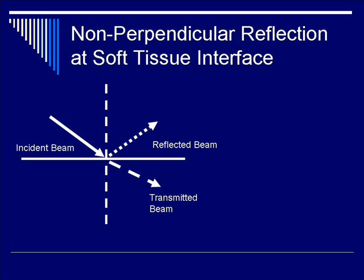The reflected beam and the transmitted beam's amplitude add up to 1, equivalent to the incident beam. However, we have additional differences in angles that we didn't see in the previous example — namely, that theta T is not the same as theta I. Snell's law describes this phenomenon, which is refraction.